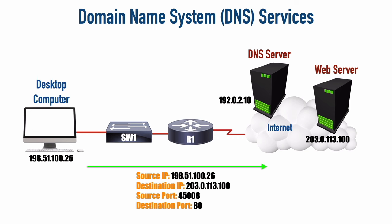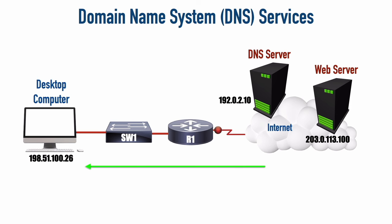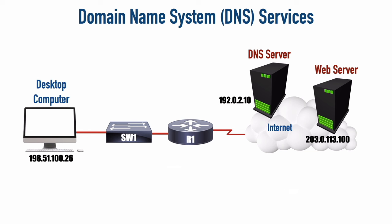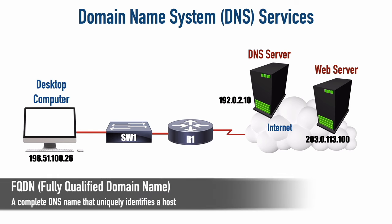If we're going to a website that's non-secured, that's going to be port 80. Or if it is secured and we're using HTTPS, that port is going to be 443. The web server responds with the web page that was requested. So the desktop computer, just knowing the name of the web server, was able to reach it thanks to the translation performed by the DNS server. Those addresses — like kwtrain.com or ftp.kwtrain.com — are called FQDNs, fully qualified domain names.